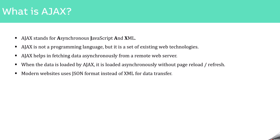Initially, servers used to send data in XML format. Since AJAX uses asynchronous calls and was receiving data in XML format, that's why in the acronym AJAX you find Asynchronous JavaScript and XML. However, modern websites mostly use JSON format to receive data, and XML format is rarely used nowadays.